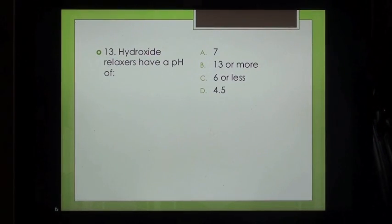Question 13: Hydroxide relaxers have a pH of: A. 7, B. 13 or more, C. 6 or less, D. 4.5.